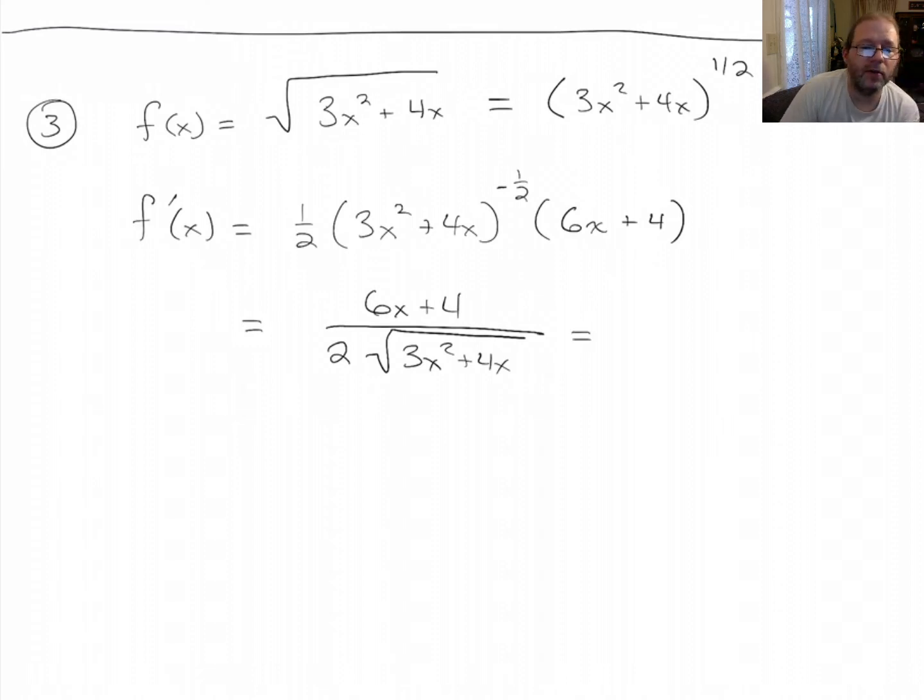And then since we do have even numbers everywhere, we can cancel this 2 with this and get a 3 and with that and get a 2. So you get (3x + 2) over square root of (3x² + 4x). Like that.